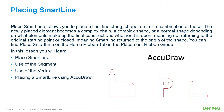Place SmartLine allows you to place a line, line string, shape, arc, or a different combination of these. The newly placed element becomes a complex chain, a complex shape, or a normal shape depending on what elements make up the final construct and whether it is open, meaning not returning to the original starting point, or closed, meaning the SmartLine returned to the origin of the shape.